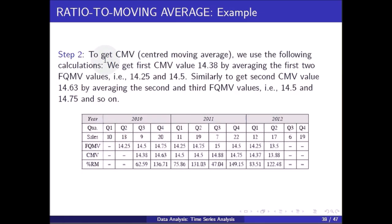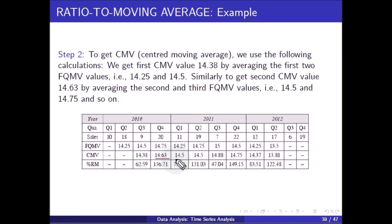Step 2: to get the CMV (centered moving average) values. The first CMV value of 14.38 is obtained by averaging the first two FQMV values: 14.25 and 14.5. The second CMV value of 14.63 is obtained by averaging the second and third FQMV values: 14.5 and 14.75. Similarly, the next CMV value is obtained by averaging 14.75 and 14.25, and so on.